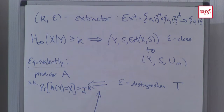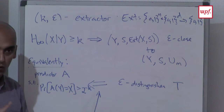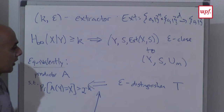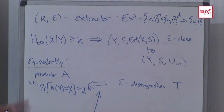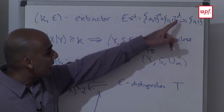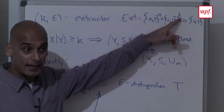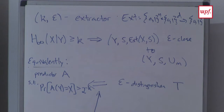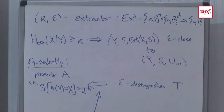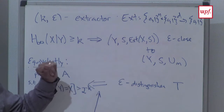We didn't see it last time — the only example of a reconstructive extractor we saw was Goldreich-Levin, or repeating Goldreich-Levin many times to get many bits out. But there are many other extractors in the literature that also have this reconstructive property. For example, they can give you a much shorter seed length — the amount of additional randomness you need to invest into the extraction can be much smaller than Goldreich-Levin, where you use n bits for even getting one bit.